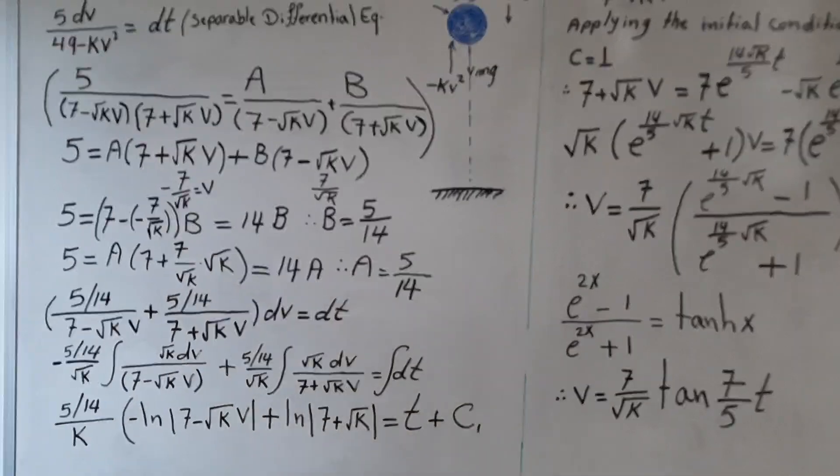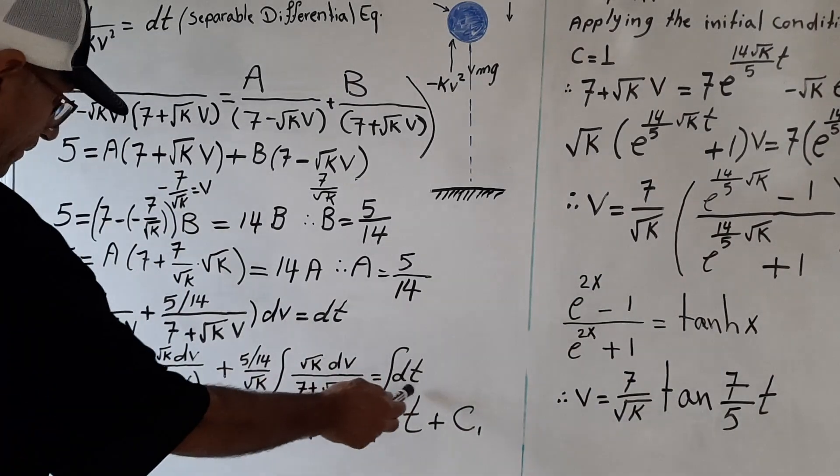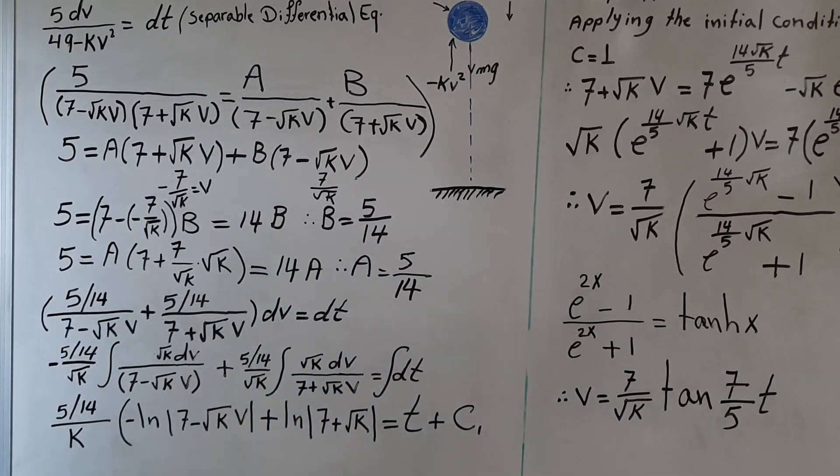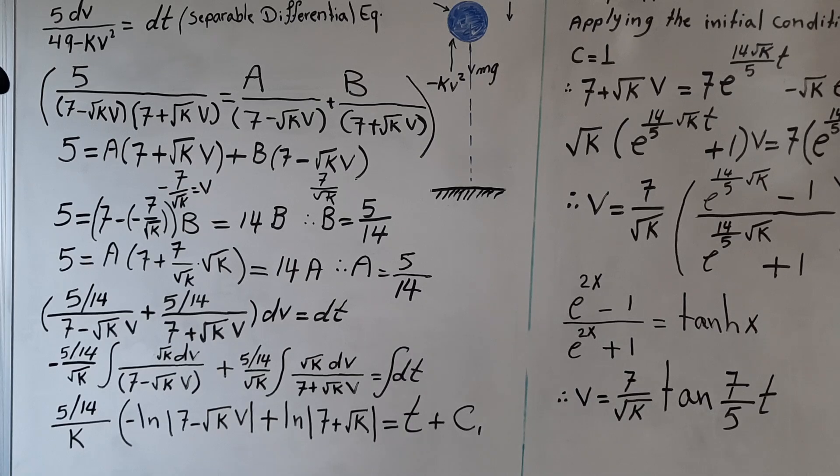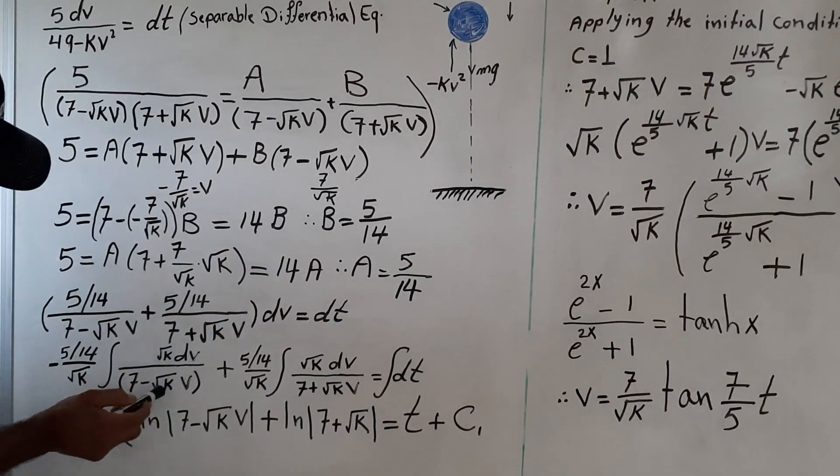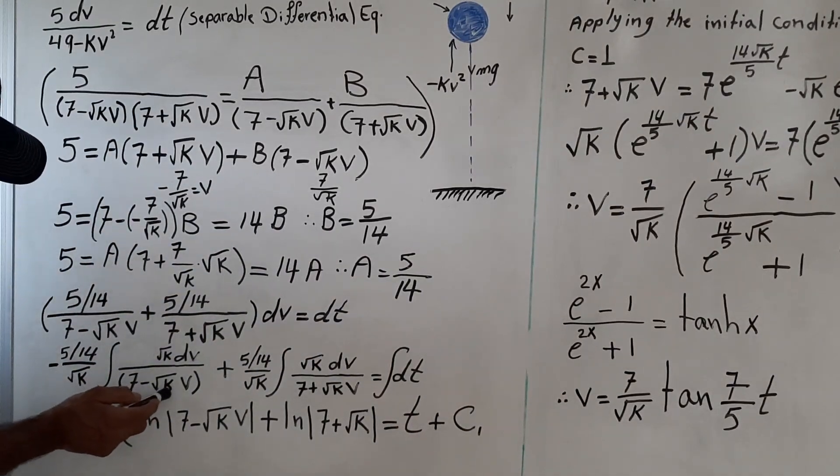Now we plug A and B in this equation, so we got 5 over 14 plus 5 over 14. We take 5 over 14 over root square of k out and integrate both sides of equation.